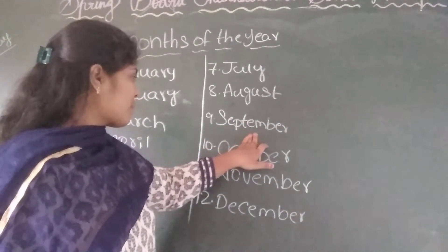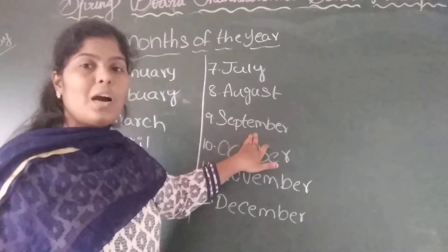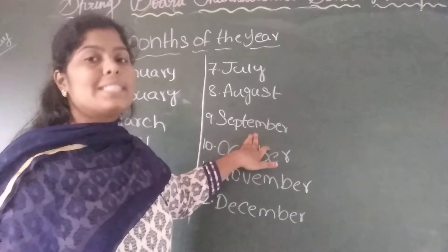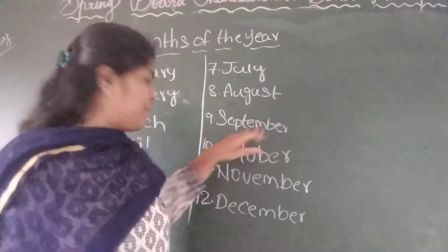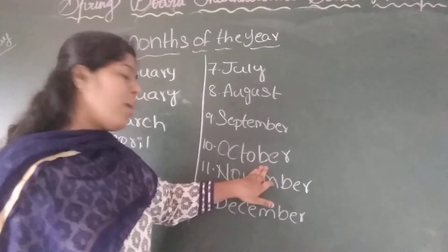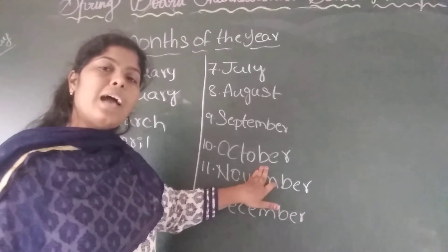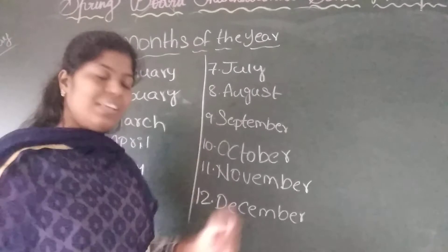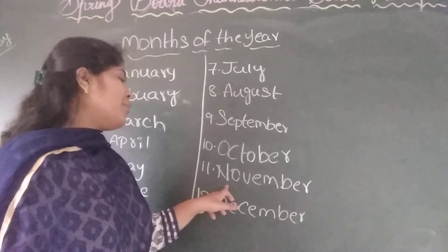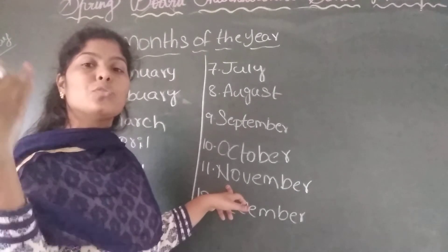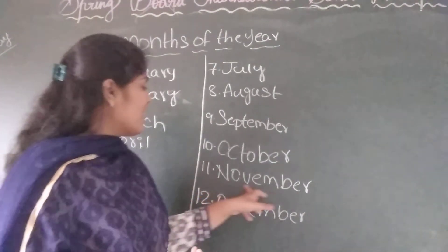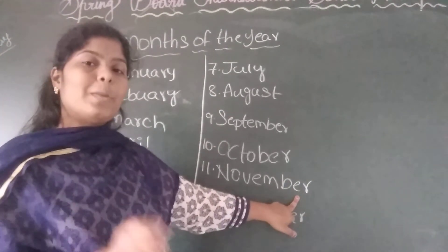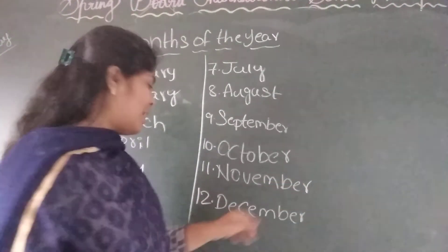September — in September we all celebrate Teacher's Day. October — in October we all celebrate Dussehra and Diwali. November — in November we all celebrate Children's Day. That means all of you celebrate Children's Day. The speciality of November is Children's Day.